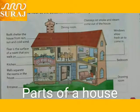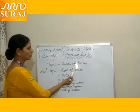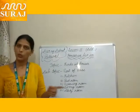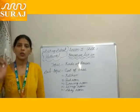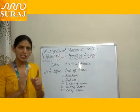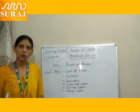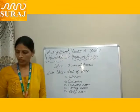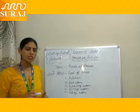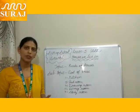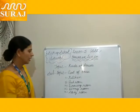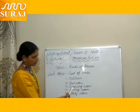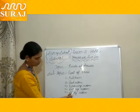Parts of a house. A house has many rooms. It has a roof on the top. Each room in a house has walls on all sides and a floor at the bottom. A house has many doors and windows. Parts of a house include the kitchen, bedroom, drawing room, dining room, and study room.